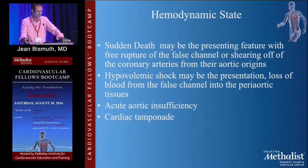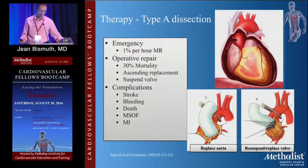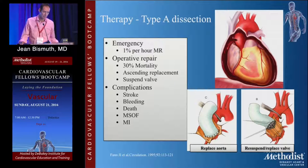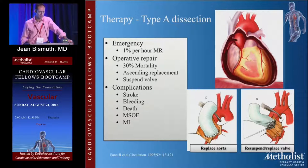Hypovolemic shock, loss of blood from the false channel into the periaortic tissues, acute aortic insufficiency, and cardiac tamponade are all features. Type A's are all emergencies. The rule is easy: one percent per hour mortality rate for the first 48 hours. Operative repair carries about a 30% mortality. It's essentially just an ascending replacement; sometimes the valve is resuspended if there are issues.